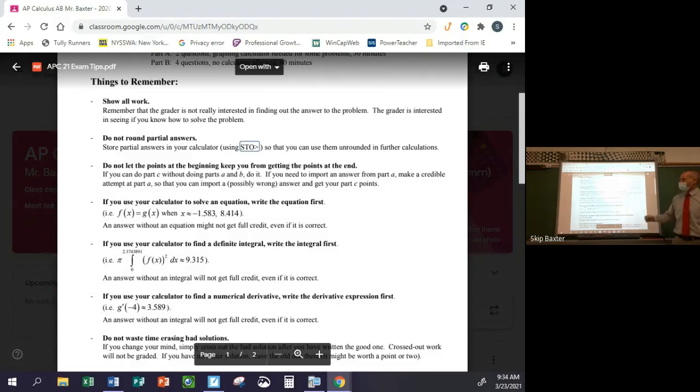Don't round partial answers, like intermediate results. Like if you find points of intersection, and you're going to use those points of intersection as limits of integration, for example, don't round them too much. If you have to round them, then just keep a lot of decimal places and use it that way. But don't forget, you have a store button in your calculator. You can store as many variables as you want.